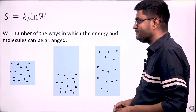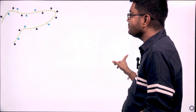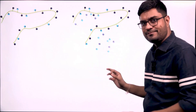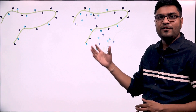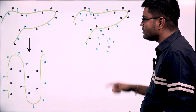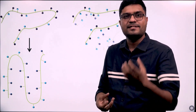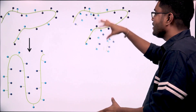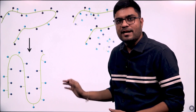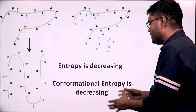Now we are going to apply this concept of W and entropy to protein folding. We have a linear protein which is unfolded. An unfolded protein can have multiple conformations — it can arrange itself in multiple ways. So for a linear unfolded protein, the value of W is high, the value of entropy is high. But once folding proceeds, the protein is trying to be arranged in one way — its native folded structure. So during protein folding, the number of ways the protein can arrange its different conformations is decreasing. That is why entropy is decreasing. We call this conformational entropy.